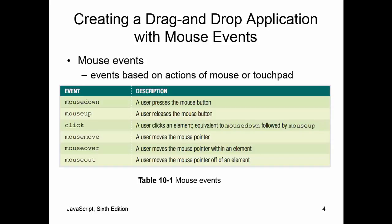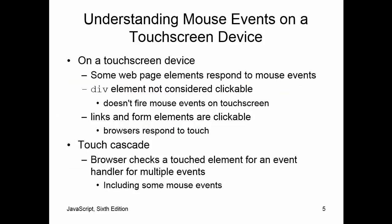Some of the mouse events we have to be concerned with are shown here — this is page 684 in the text, Table 10-1. Mouse down: when you hold down the mouse. Mouse up: when you let go. Click: a mouse down followed by a mouse up. Mouse move: when you move your pointer. Mouse over: when you move your pointer over an element. Mouse out: when you move your pointer off an element.